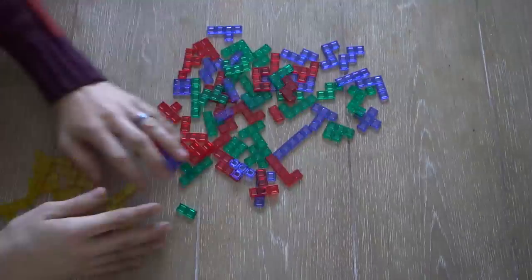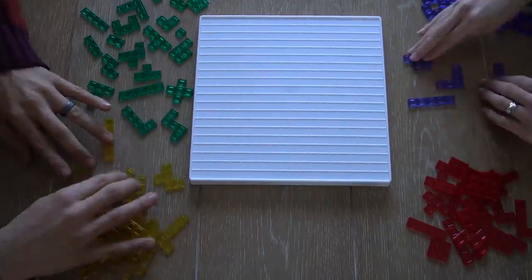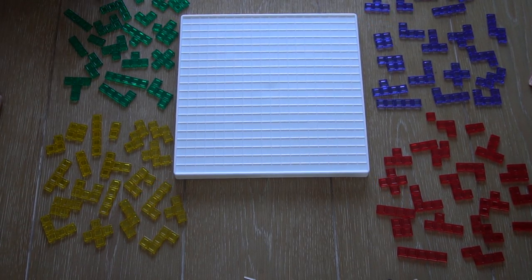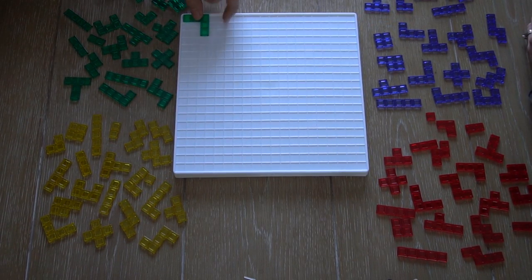To begin with, separate all the colors, one color to each player. Every player must pick a corner on the board that they will be starting from, and their first piece needs to touch that corner.